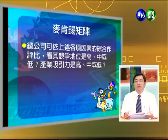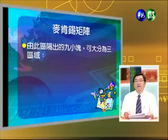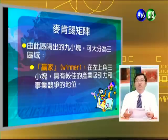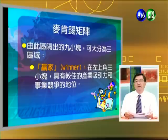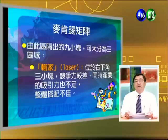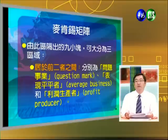根據評比，九個小塊可分為三個大區域：第一個是贏家，位於左上角三個小區塊，具有較佳的產業吸引力和事業競爭地位；第二個是輸家，位於右下角三個小區塊，競爭力較差且產業吸引力不佳；最後是居於兩者之間的，包括問題事業、表現平平者，以及利潤生產者。